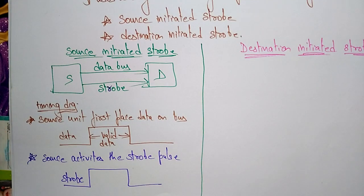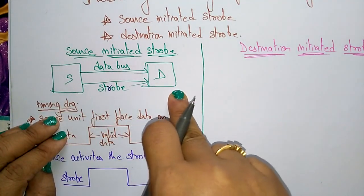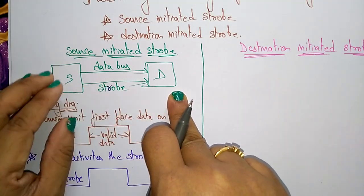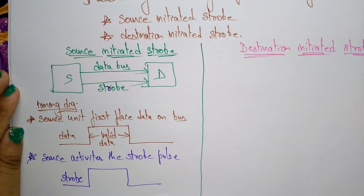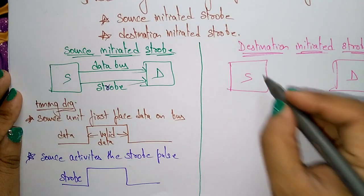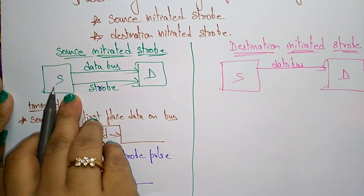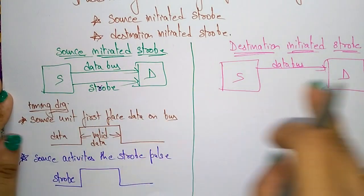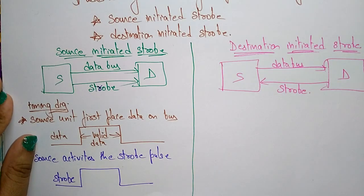The strobe is a control signal that alerts the destination that data is coming on the data bus. That is the main point of source-initiated strobe. Now coming to destination-initiated strobe: the setup is the same with source and destination, and data is placed on the data bus. But here the difference is that the destination initiates the strobe, not the source.